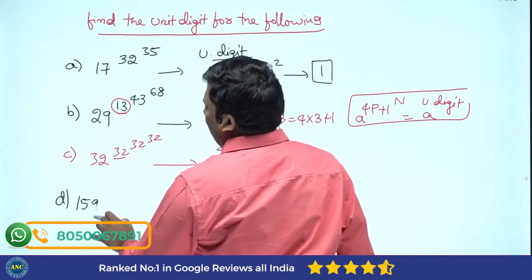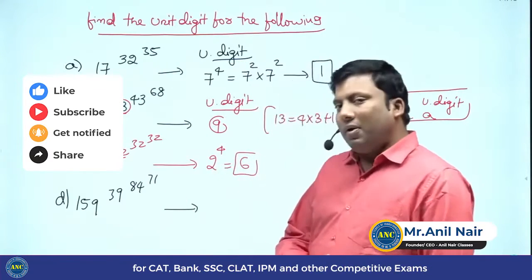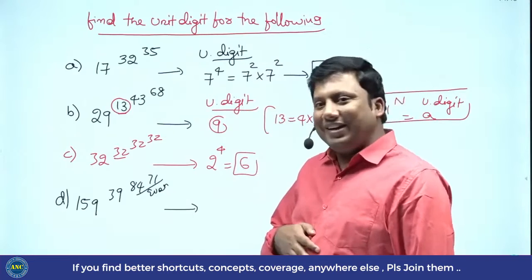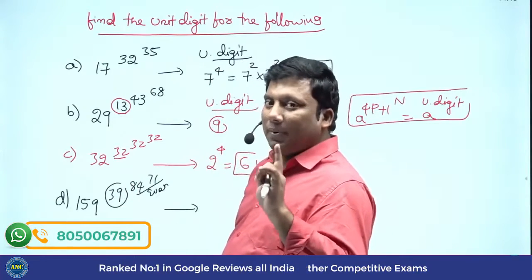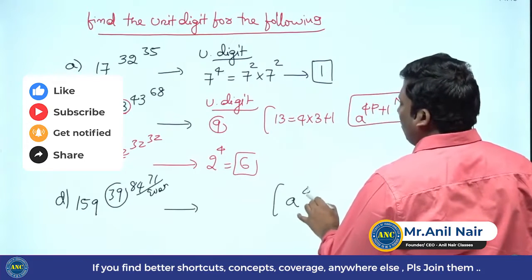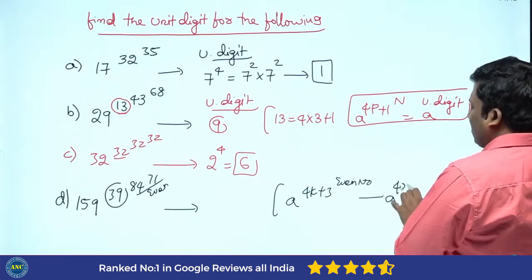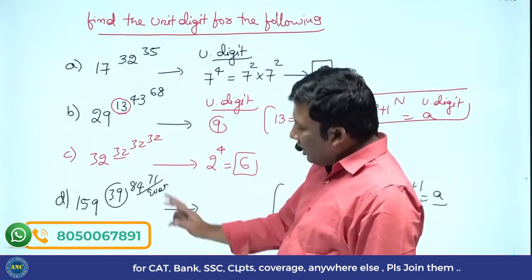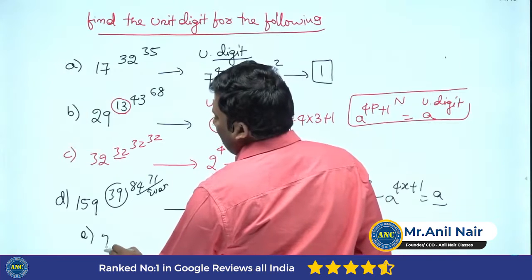Next: 32 power 32 power 32. Is 32 divisible by 4? Yes. A power 4k gives A power 4. 2 to the power 4 is 16. Unit digit is 6. Next: 159 power 39 power 84 power 71. 84 is an even number, so even power of any number is even. 39 — is 4 into 9 = 36 plus 3, so 4k plus 3.